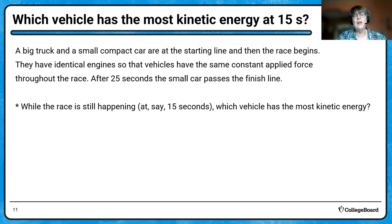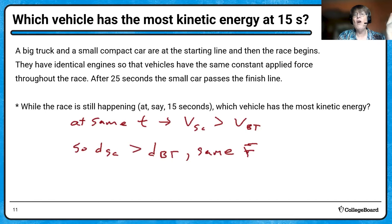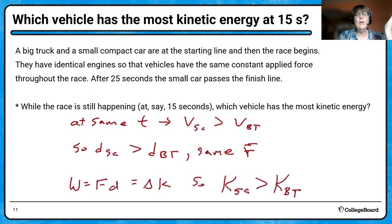Instead of waiting for them to cross the finish line, let's see what's going on mid-race — say at 15 seconds. Which vehicle has the most kinetic energy? They have the same time and the same force, but the small car is going faster at 15 seconds — that's why it wins the race. The small car will have gone a further distance, and since work is force times distance, mid-race the small car will have more kinetic energy than the big truck.